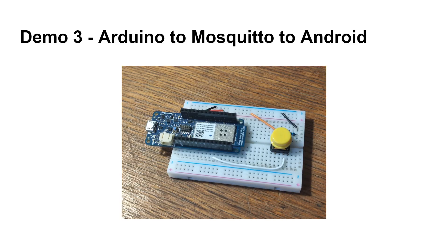Now I also want to show you how you can use MQTT on an Arduino. I've got an Arduino here with a basic button on it. I won't show you how to build that — there are lots of tutorials on the internet. It's basically a button and a resistor connected to the right pins for detecting the GPIO state and for the power.